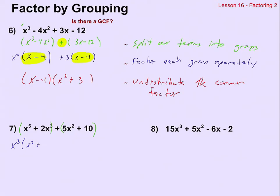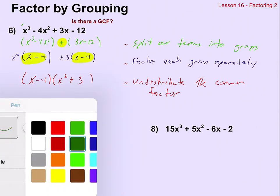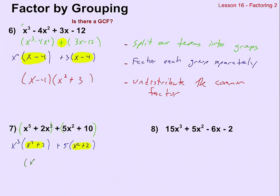Leaving me with x squared plus 2. And from the second group, I can pull out a 5, leaving me with x squared plus 2. Again, it's this common x squared plus 2 that I need to see in both cases. If that's not the same thing, we've got trouble. But it is the same thing, so I'm going to undistribute that x squared plus 2 from the x cubed plus 5, and those are my factors.